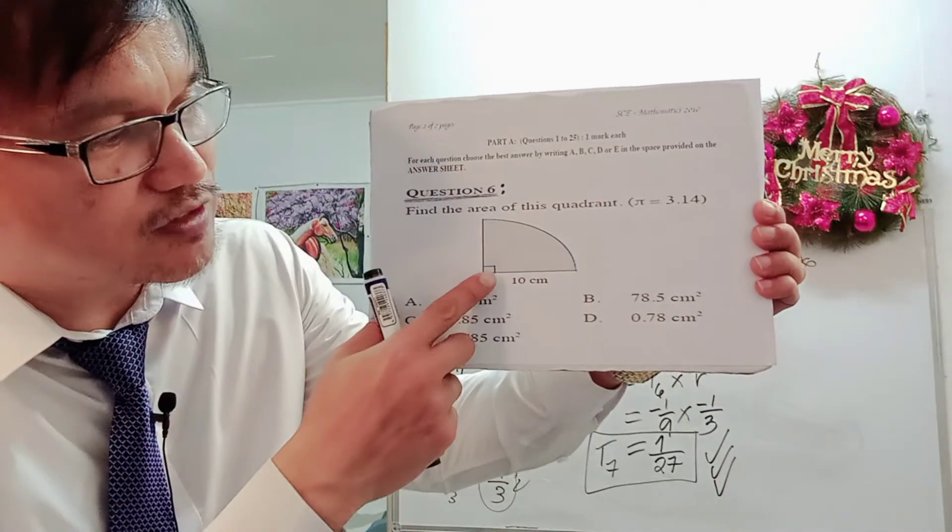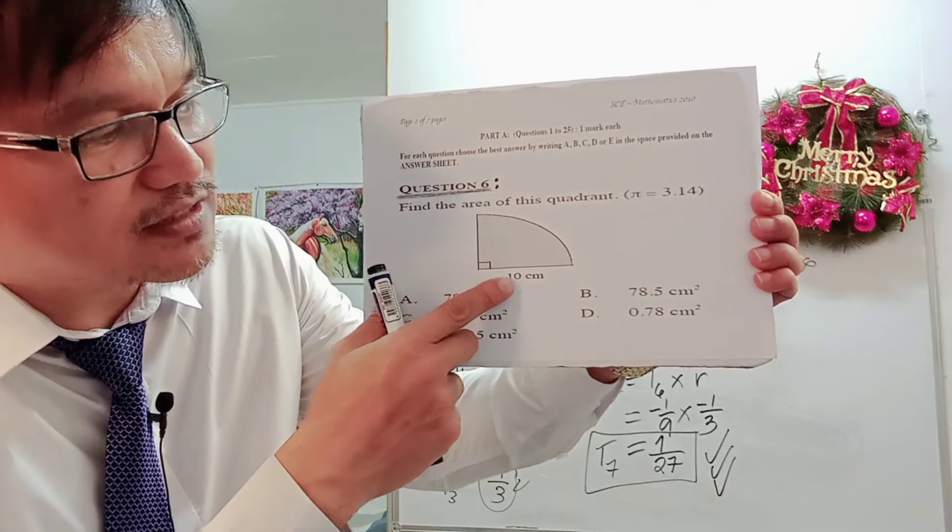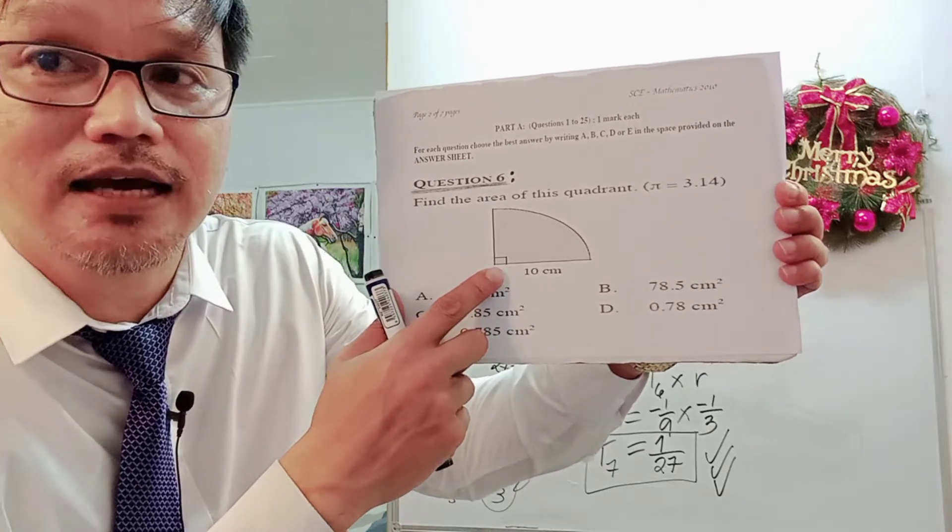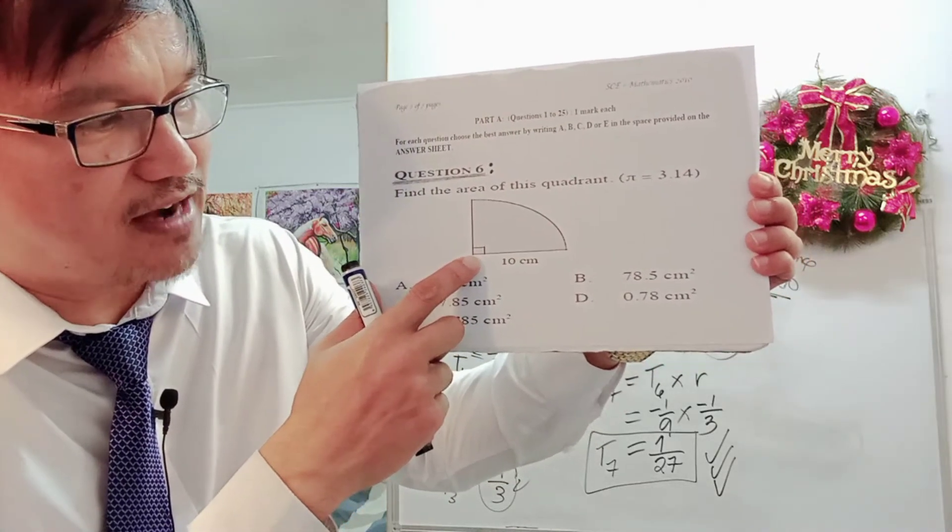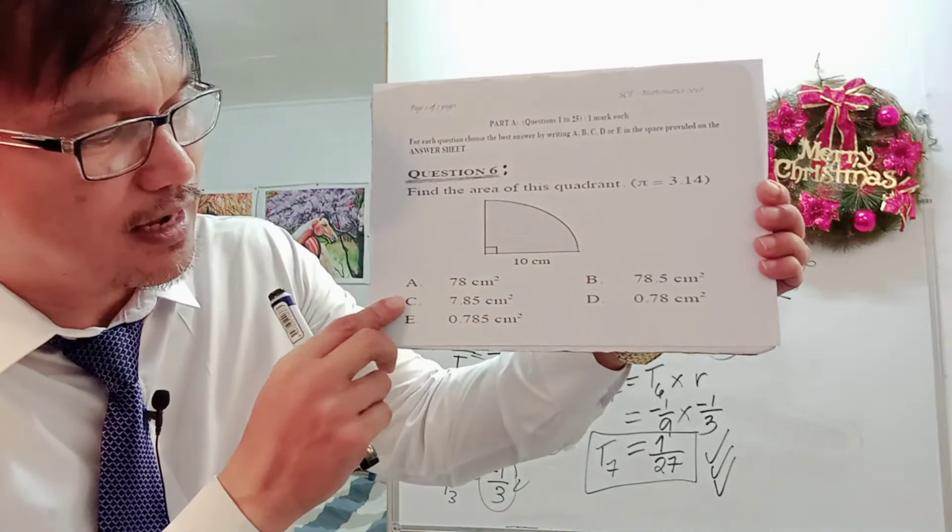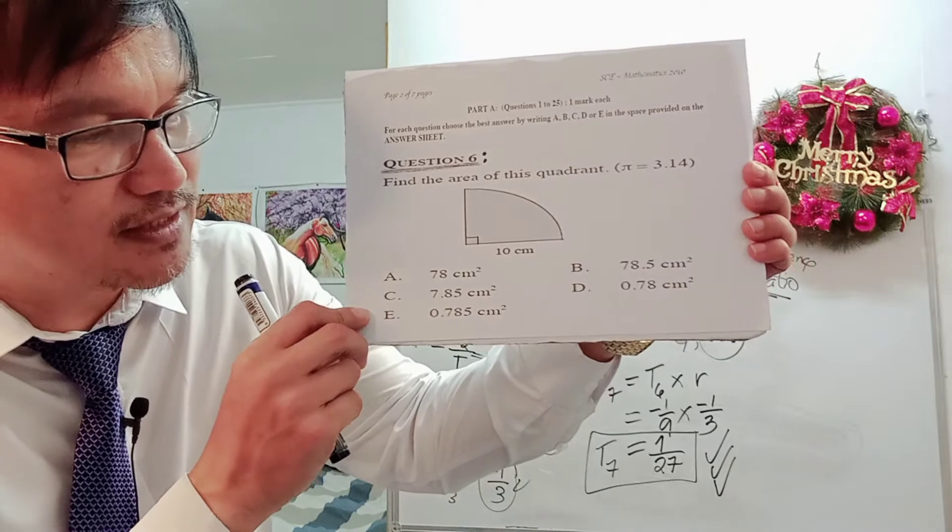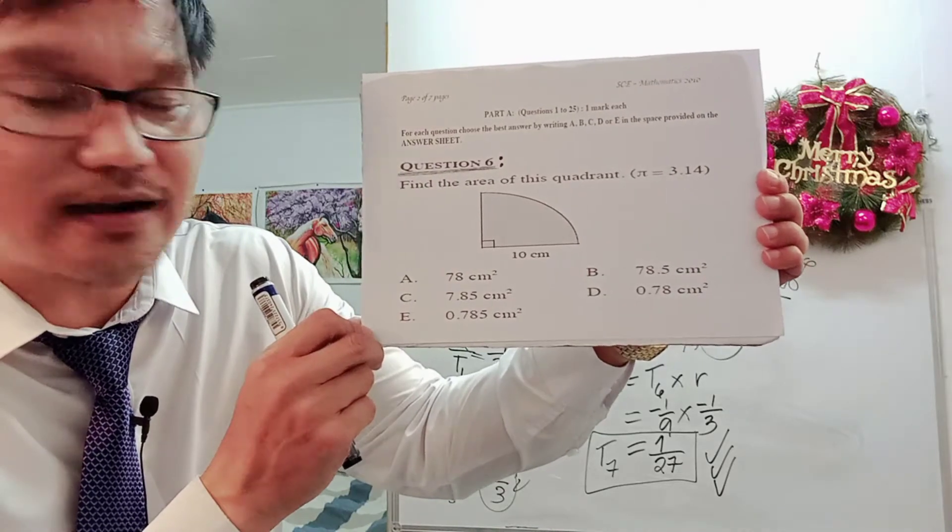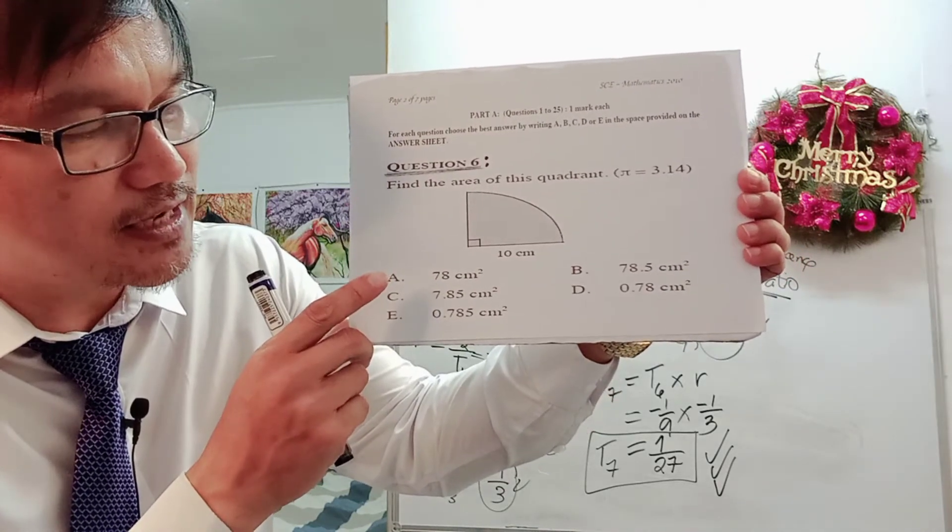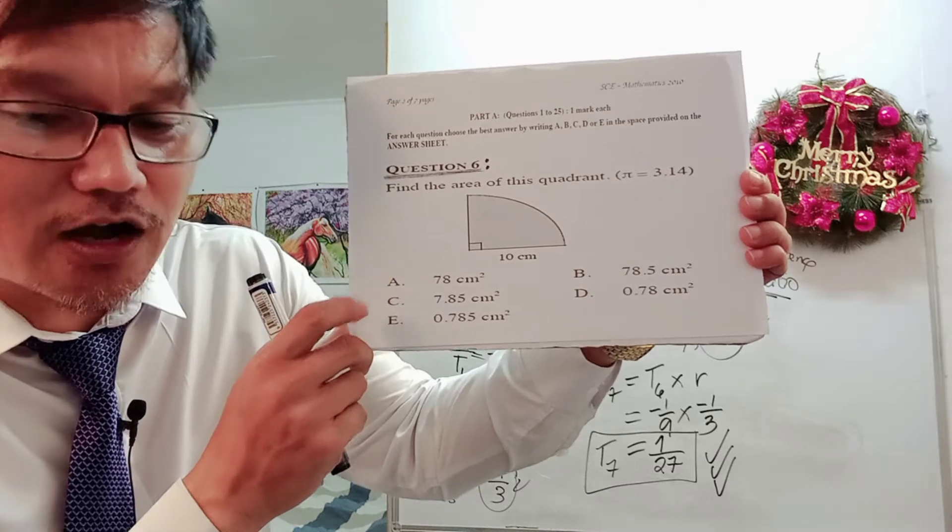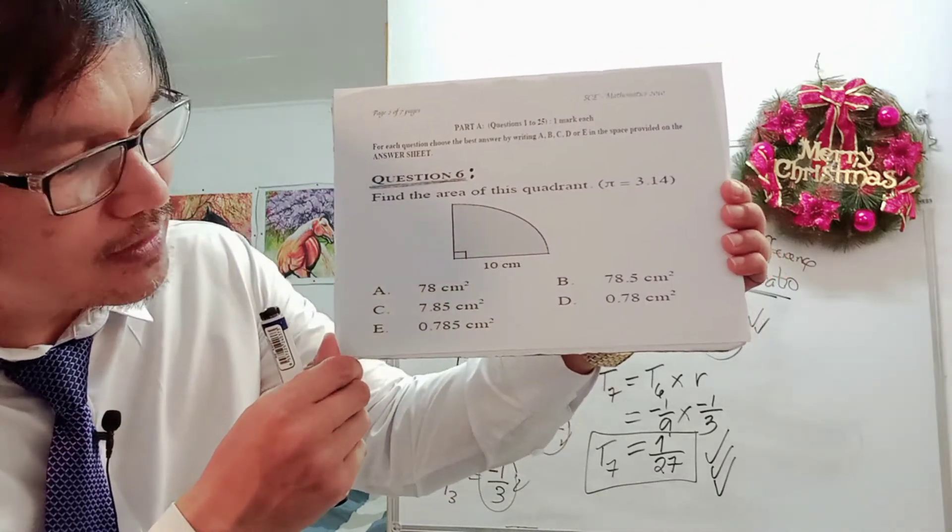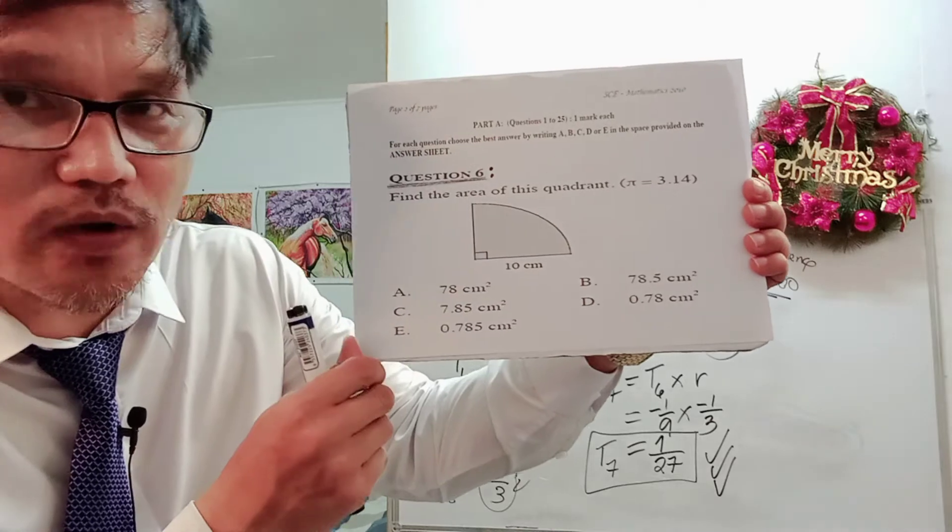The choices are, now take note, our given 10 cm is the radius. That's the radius. And these are the options, which later we decide which of these options is the correct answer in finding the area of the quadrant. Letter A, 78 cm². Letter B, 78.5 cm².